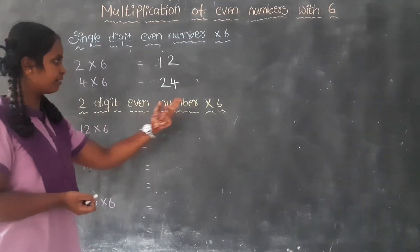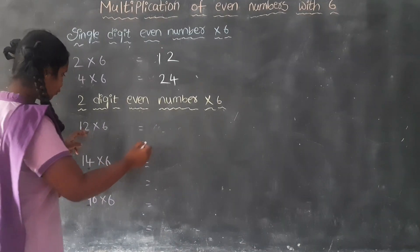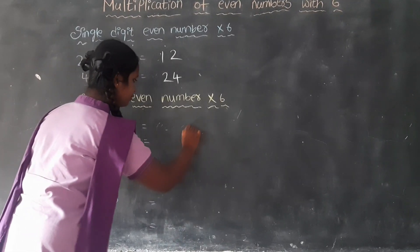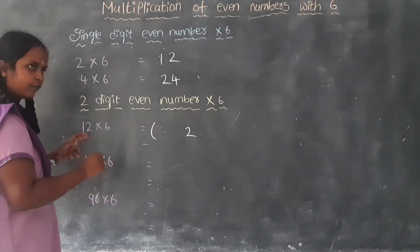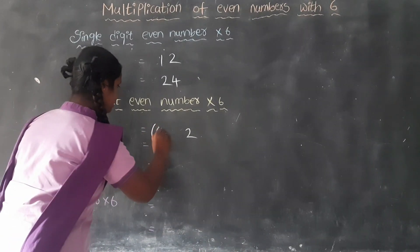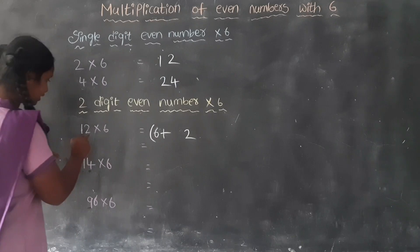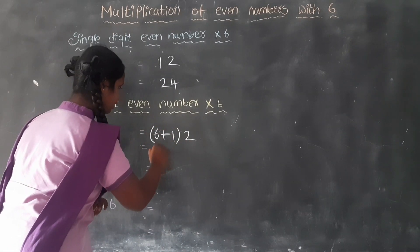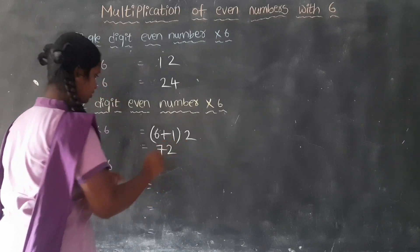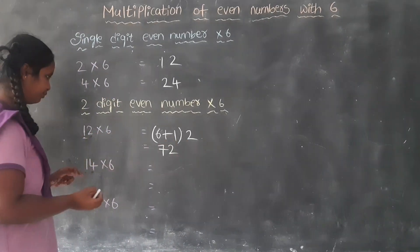Now we will see 2-digit even numbers times 6. 12 times 6. We want to write the unit place as it is. What is the half of 12? 6. What is the tens place here? 1. 6 plus 1? 7. The answer is 12 times 6 is 72.